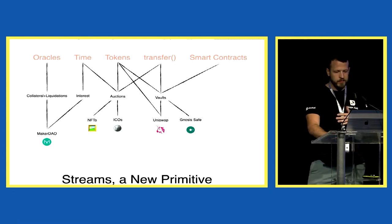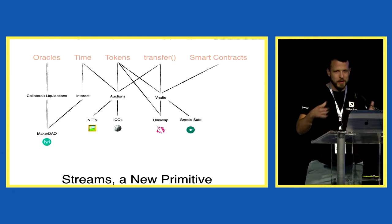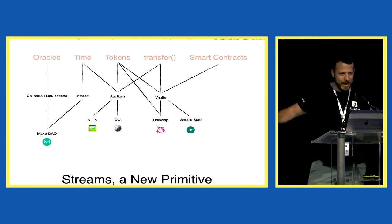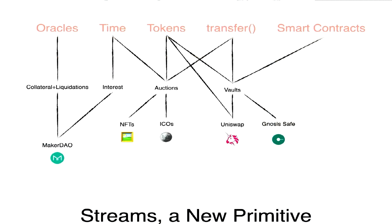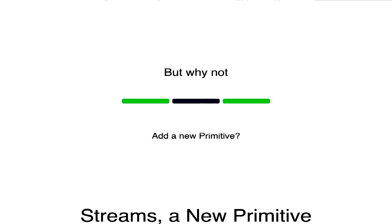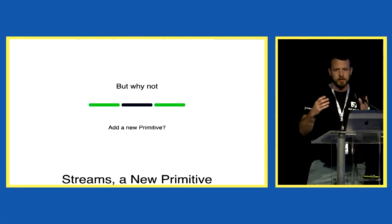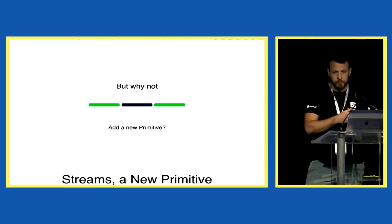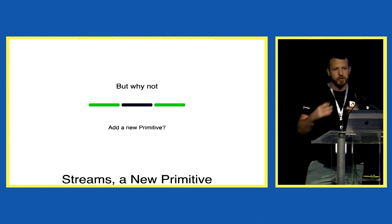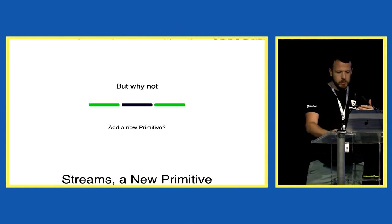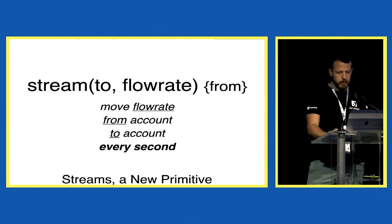We built all these things in DeFi, and obviously this is not an exhaustive list — there's a million other things we built by combining these primitives. But why not try, instead of combining existing primitives, to add a new one? What we're doing with Superfluid is trying to increase the number of primitives — the number of things you can do with money itself. We're not trying to build on top of money; we're trying to build more into the token contract. And that looks like the stream function.